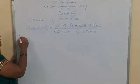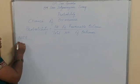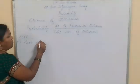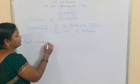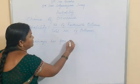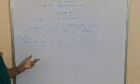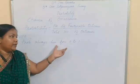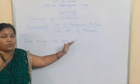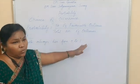In probability there are some conditions. The first one is: probability always lies from 0 to 1. The result of the probability is always from 0 to 1. That means the values should not be less than 0 and should not be greater than 1.